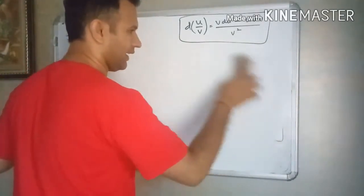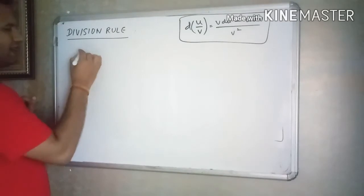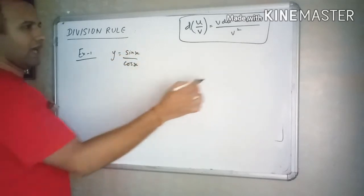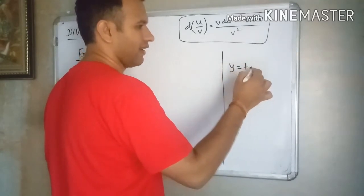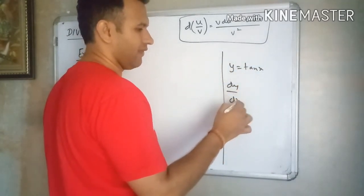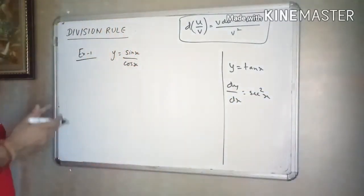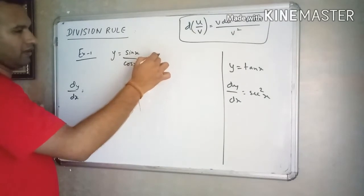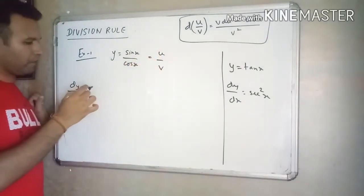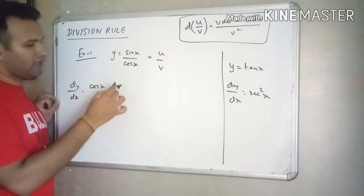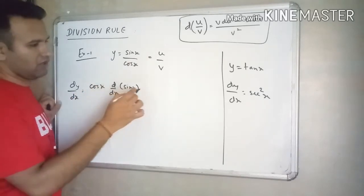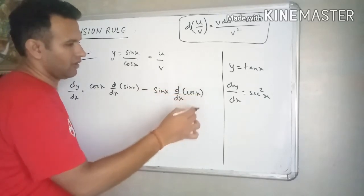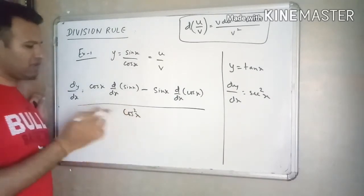Let us take the first example using the division rule: y is equal to sin x by cos x. We know sin x by cos x is tan x, so the derivative should be sec square x. Let us verify using the division rule. Here sin x is u, the first function, and cos x is v, the second function. Applying v du minus u dv divided by v square.